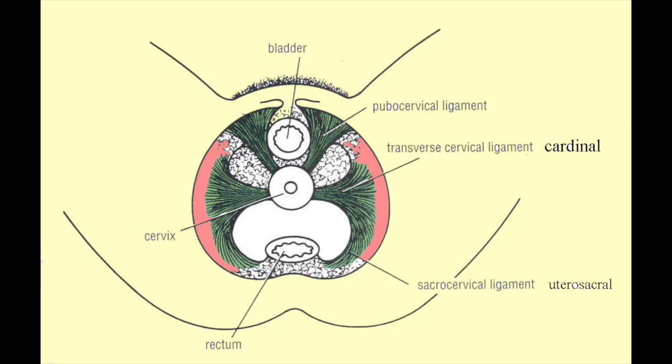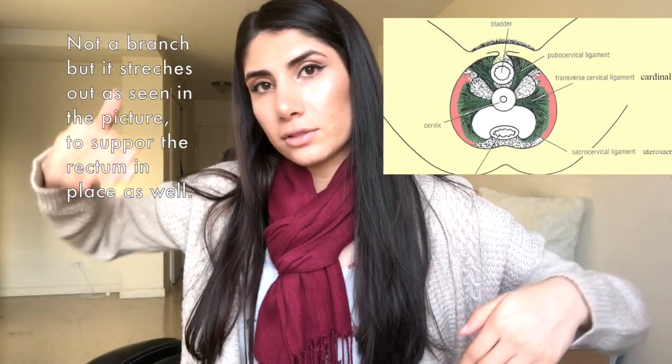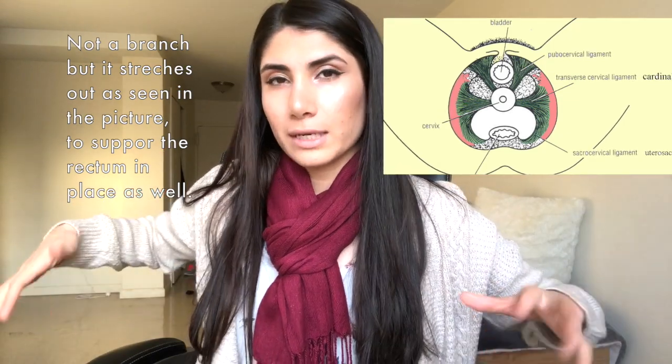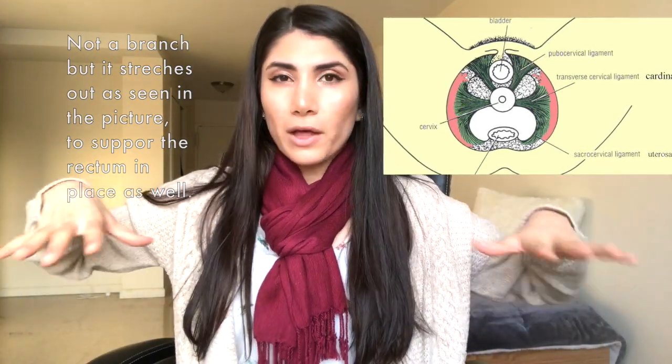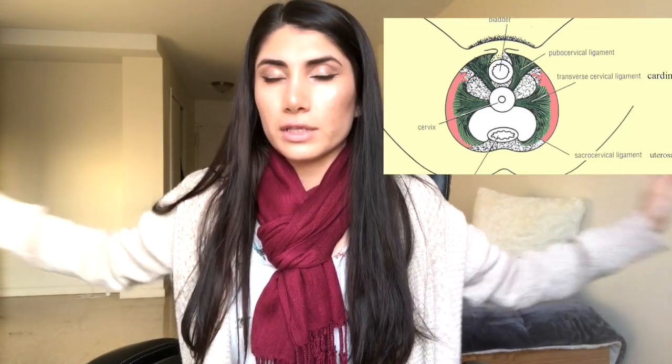We have this ligament called the cardinal ligament. Picture the uterus — my hands are the ligament, holding on side to side and keeping it steady. There's another branch coming off the uterus, another cardinal ligament, which holds the bladder up front. Behind it is the rectum, and there's a branch holding that in place as well. So it essentially stabilizes the pelvic floor.